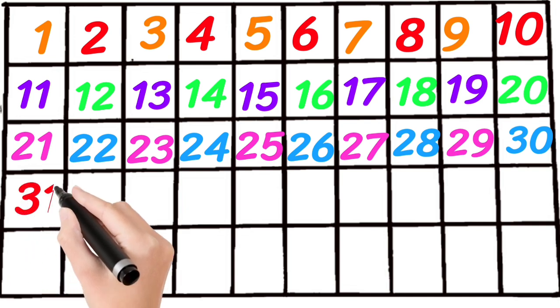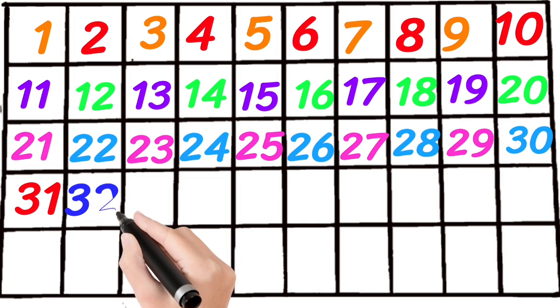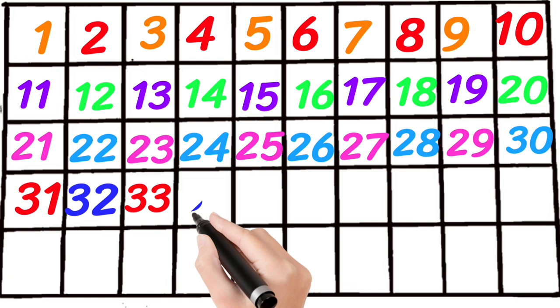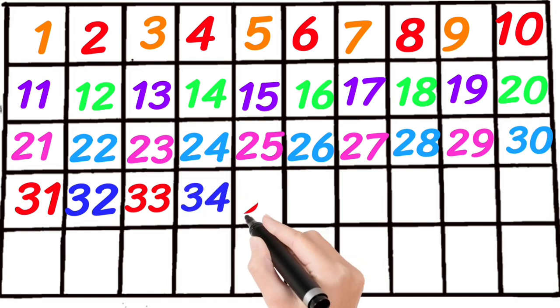Thirty-two, thirty-three, thirty-four. Three, five, thirty-five.